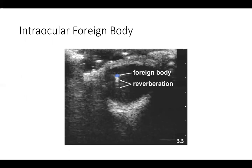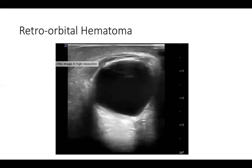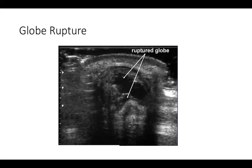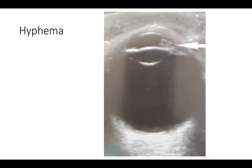For intraocular foreign bodies, sometimes you may not see the foreign body itself but just the artifact posterior to it — reverberation, ring-down artifact, or shadowing based on the type of foreign body. A retrobulbar hematoma can be seen around the eye. For globe rupture, you lose that contour of the posterior chamber completely. Hyphema is different because you're focusing on the anterior chamber — it's a very small space and can often be found on physical exam as well. If you're looking at that anterior chamber on ultrasound, you will see hyperechoic densities on the sides, which is indicative of a hyphema.